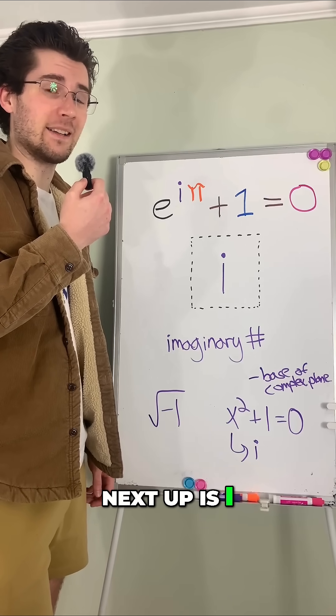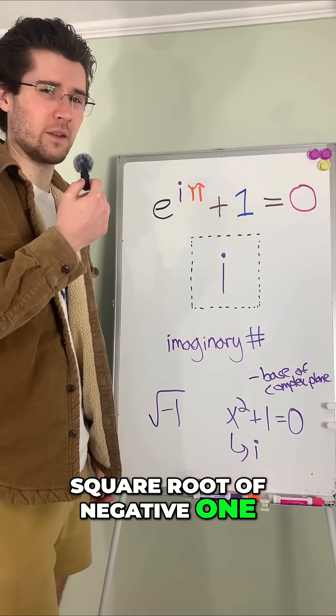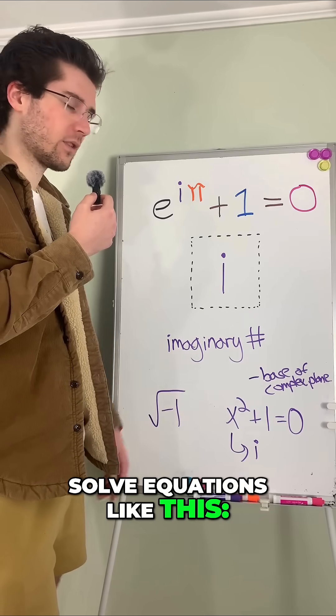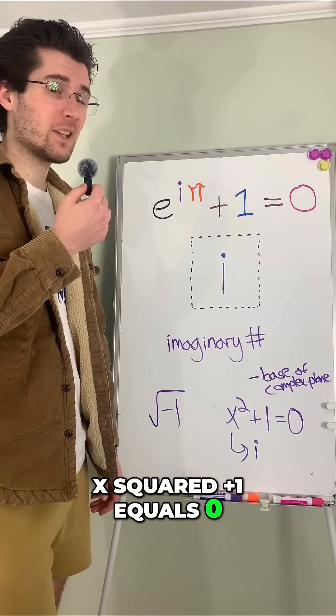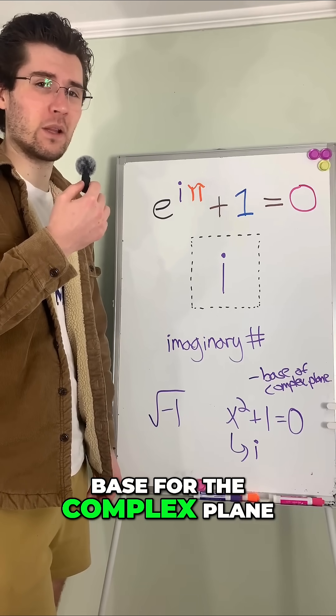Next up is i. i is the imaginary number. It's defined as the square root of negative 1, which shouldn't exist. We use i to solve equations like this: x squared plus 1 equals 0. x squared can't equal negative 1 without i, because i is the base for the complex plane.